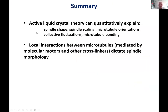In summary, a very simple active liquid crystal theory can quantitatively explain the shape of the spindle, the scaling of the spindle, the orientation of microtubules throughout the spindle, the collective fluctuations of microtubules in the spindle, and the bending of microtubules in the spindle. This is essentially the simplest theory you could possibly write down, where everything is determined by the local interaction of microtubules with each other due to cross-linkers and molecular motors.